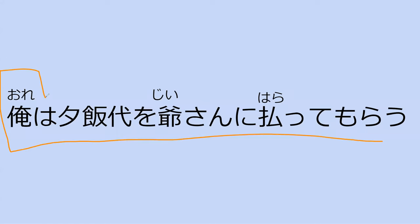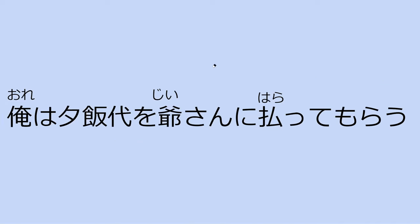Now we have this sentence for you to read and tell me what you think it means. The old man pays for dinner. Yes — the old man pays for dinner, and I'm like receiving that — I'm making him do it. I make the old man pay for dinner. So officially it's I receive the old man paying for my dinner.